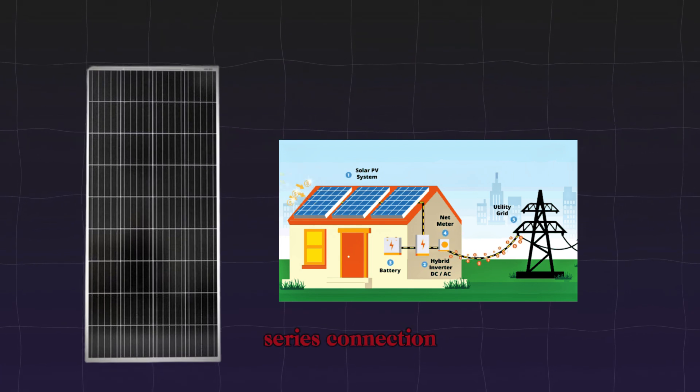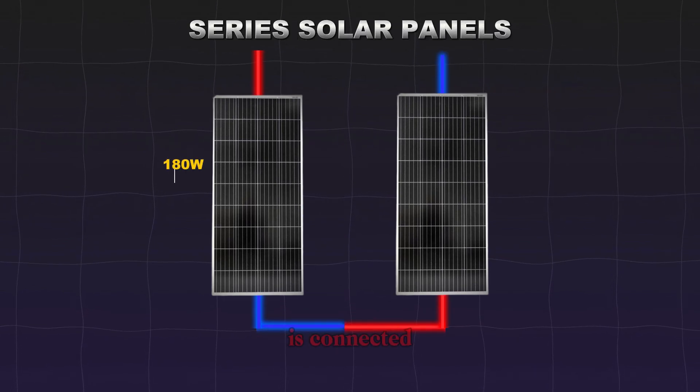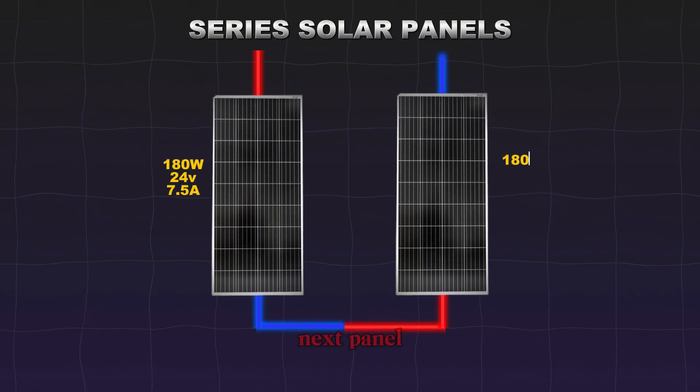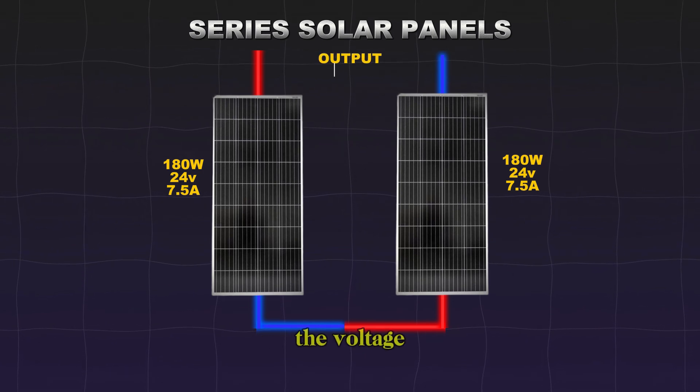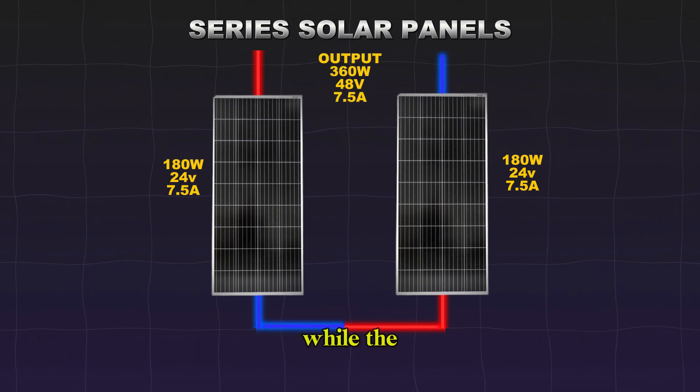In a series connection, the positive terminal of one panel is connected to the negative terminal of the next panel, and so on forming a chain, and this arrangement adds the voltage of each panel together, while the current remains the same.